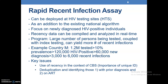The rapid recent infection assay can be deployed at HIV testing sites (HTS) as an addition to the existing national algorithm. Focus is on newly diagnosed HIV-positive individuals, and this recent data can then be compiled and analyzed in real-time. In this program, large numbers of patients are being tested, and coupled with index testing, can yield more recent infections.